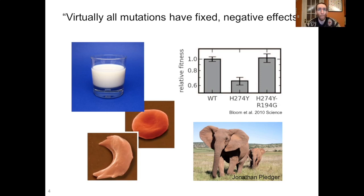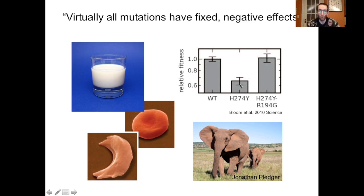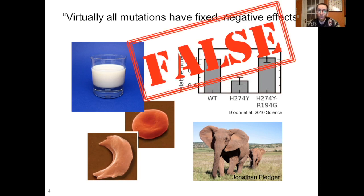For example, lactase persistence is a beneficial mutation with no downsides. Sickle cell disease — the sickle cell allele is harmful in the absence of malaria, but in malaria-endemic populations, that allele is beneficial because heterozygotes have resistance to malaria. In influenza, an allele conferring resistance to Tamiflu has a fitness cost, but if you have a compensatory mutation — a second mutation in that same genome — it recovers that fitness cost, so genetic context matters. And there's the example of the tuskless allele in elephants, which is beneficial in the context of human hunting. So virtually all mutations having fixed negative effects is false.